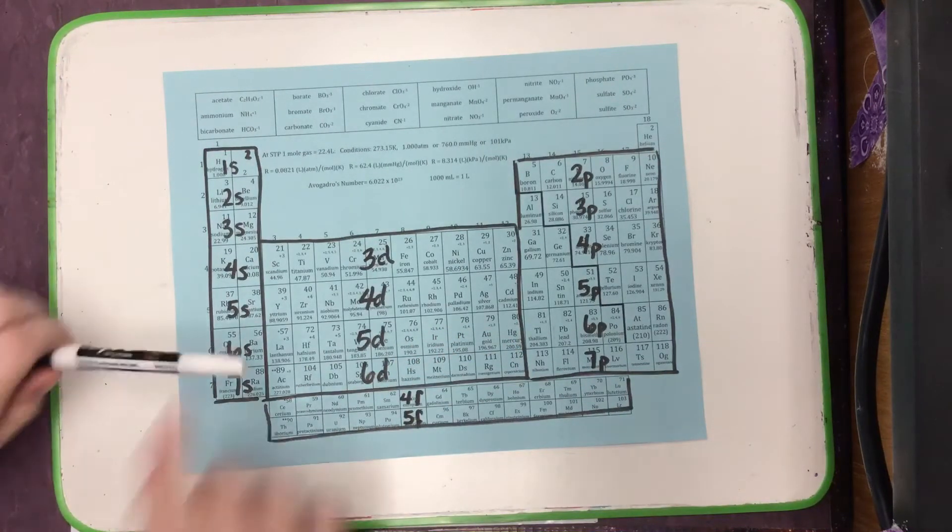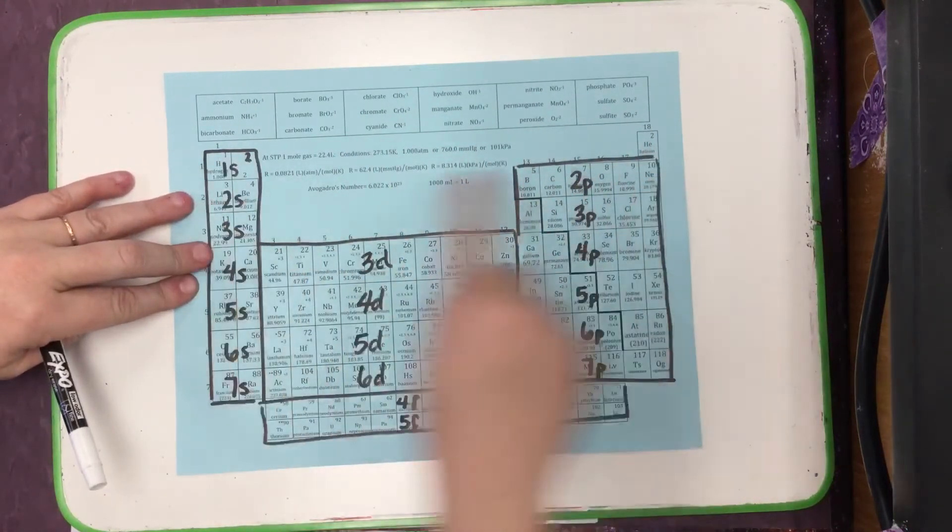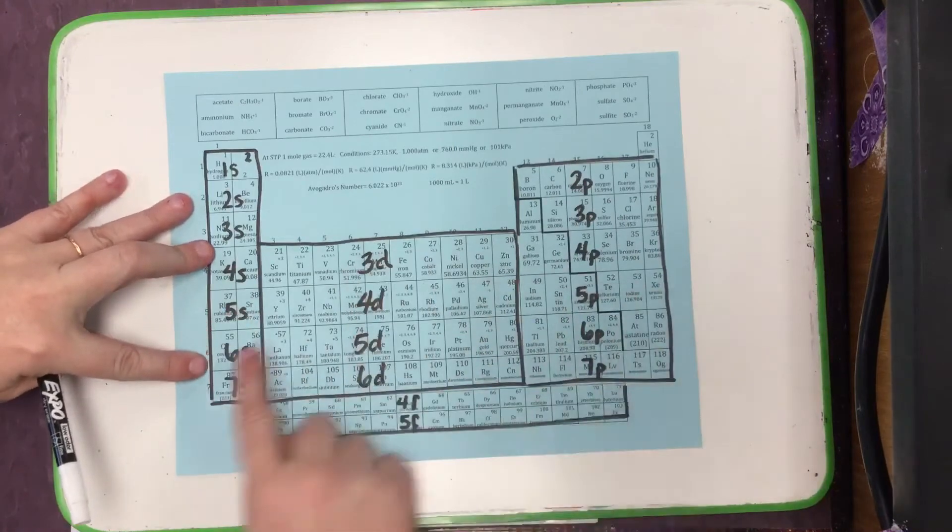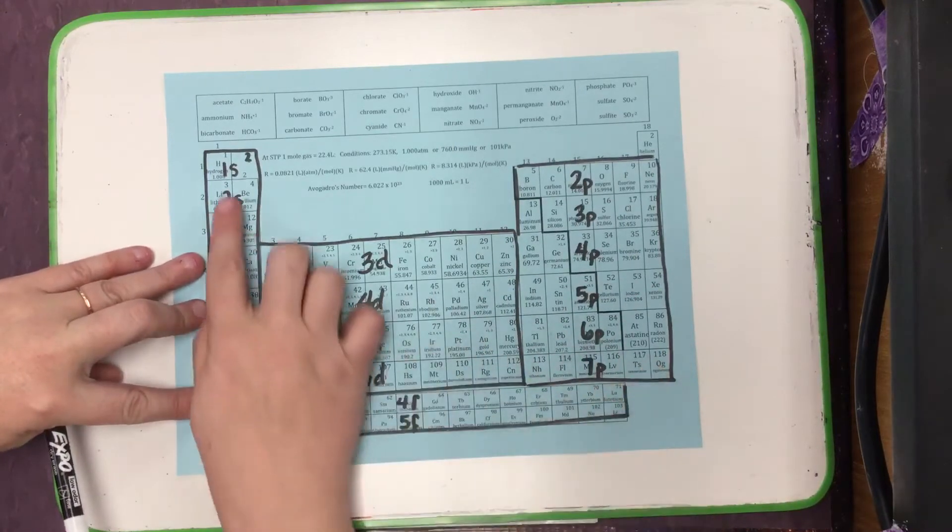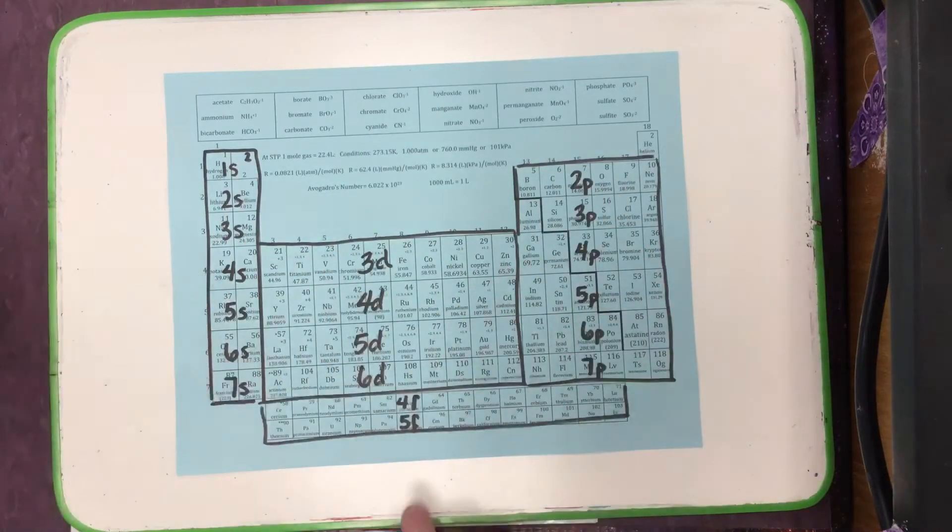So now we have our energy levels labeled, because that's the entire row across: 1st energy level, 2nd energy level, 3rd, 4th, 5th, 6th, and 7th. And we also have our individual subshells labeled, 1S, 2S, 2P, 3S, 3P, all the way down.